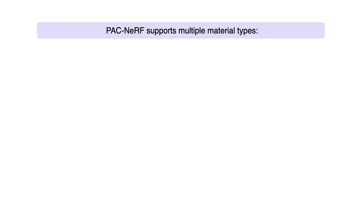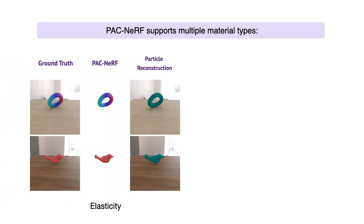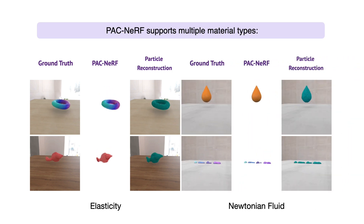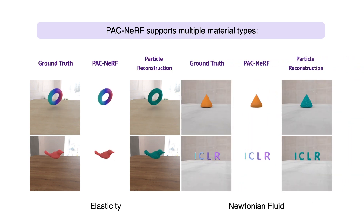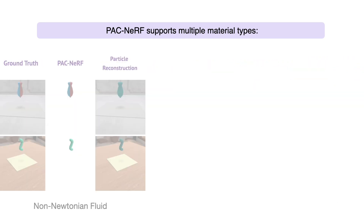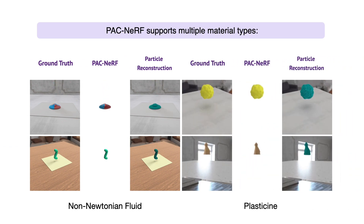PAC-NERV supports multiple material types including Elasticity, Newtonian Fluid, Non-Newtonian Fluid, Plasticine, and Sand.